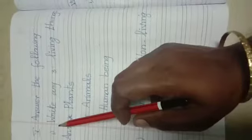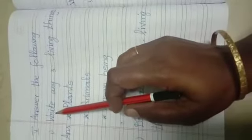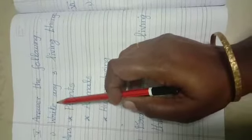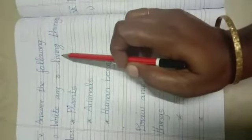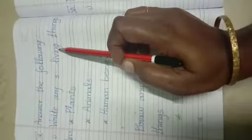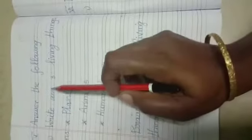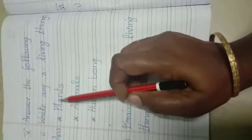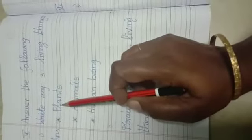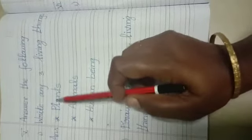Then first of all, first question. Write any three living things. Answer. First one, plants. P-L-A-N-T-S. Plants.